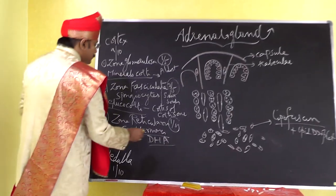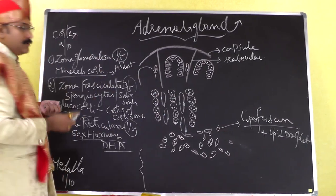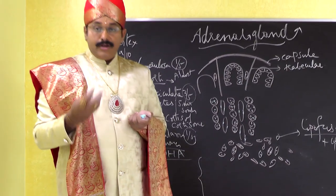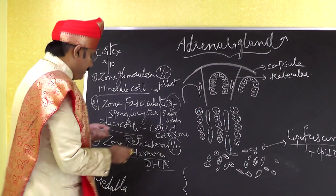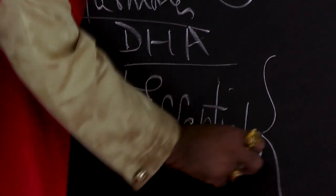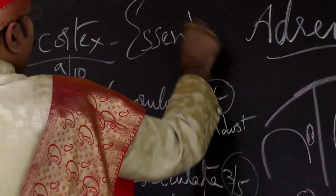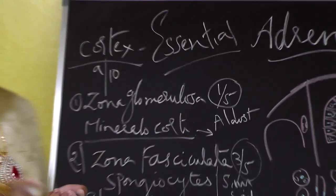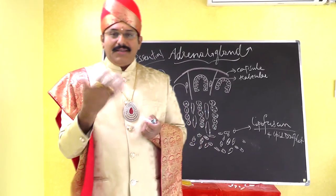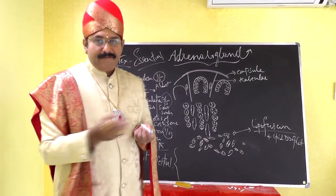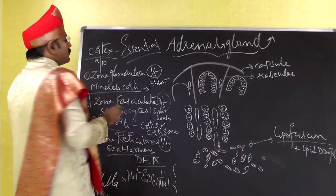The adrenal medulla develops from neural crest derivatives. It is not essential for human life, unlike the adrenal cortex, which is very much essential. If the adrenal cortex is damaged, the hormones must be given externally; otherwise life is not compatible.